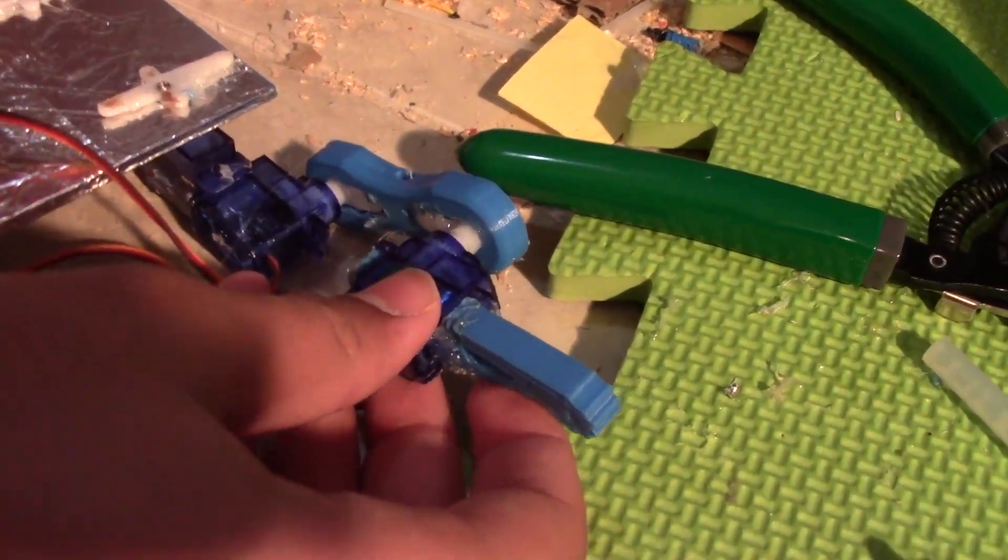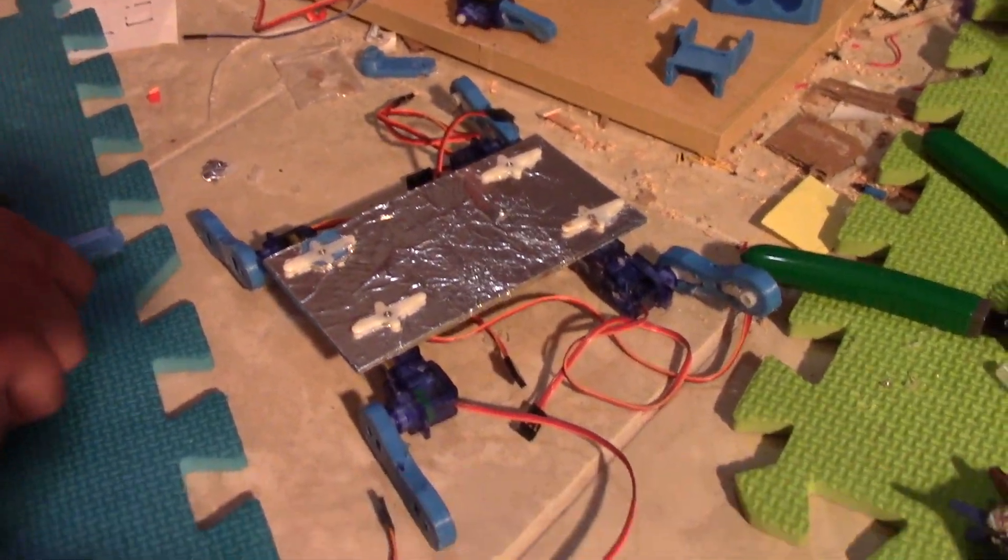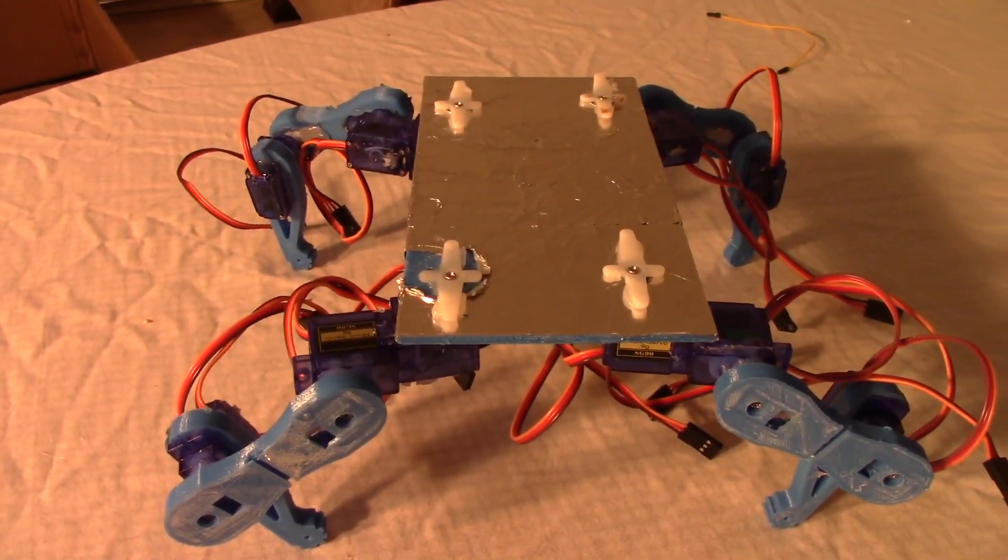So these servos just come, snap on over here and you can screw them on from here. And you need to do that for all 4. Here's how the robot looks like and now it's time to do the wiring.